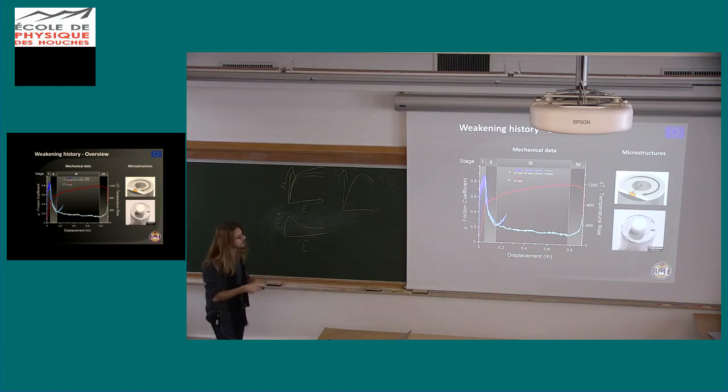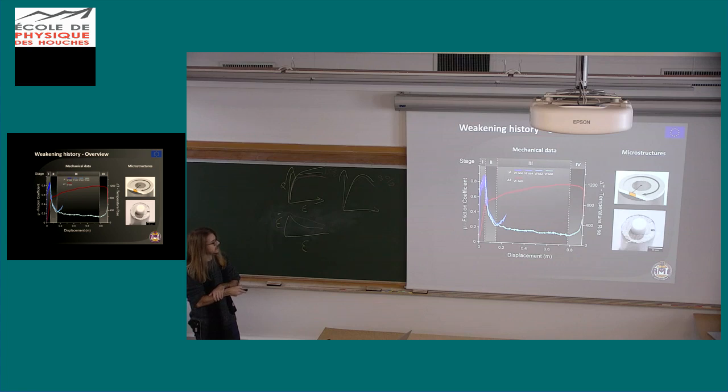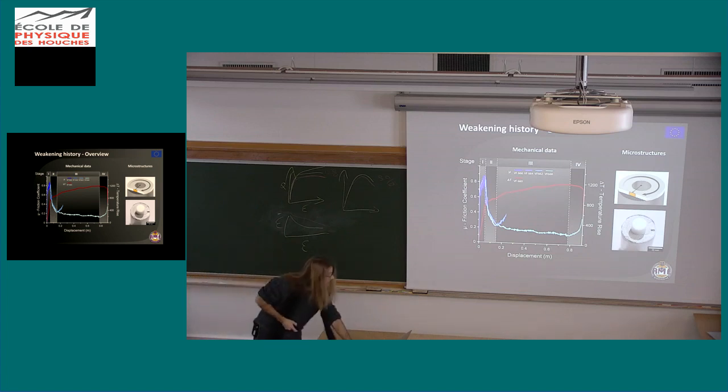Microstructures. We recover the sample after each experiment, and you already see that the sample shows the nice reflecting surface that pretty much every material sheared at high velocities shows. But our focus was not on the mirrors as usual, as is usually done. We try to recover the full sandwich, and this being a game changer for my project, because we try to recover from top to bottom what is the whole architecture of the principal slip zone, not just what is believed to be the slip zone itself. So we cut parallel to the velocity vector and explore it at the electron microscope.